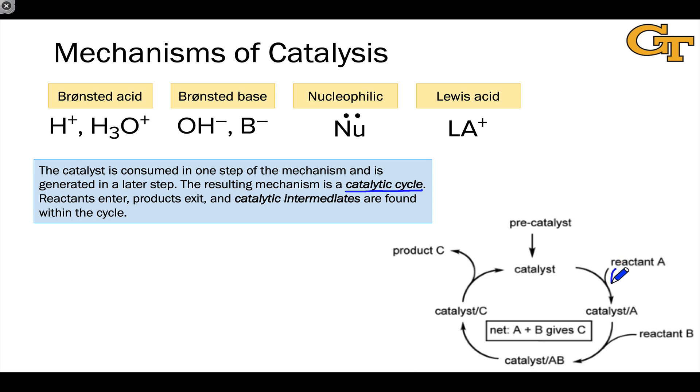Within the catalytic cycle, we see reactants entering. So for example, here comes reactant A, and here comes reactant B into the cycle. Not necessarily in a single step. Here we see A and B entering at different steps. And we see products exiting the cycle. And so here we see product C exiting.